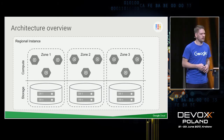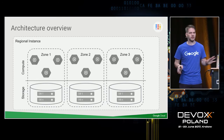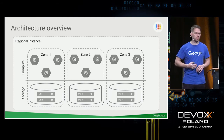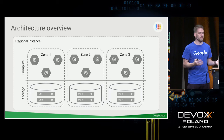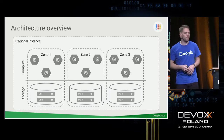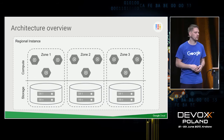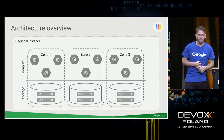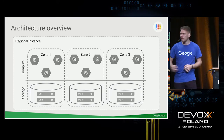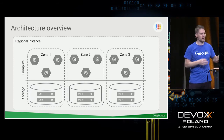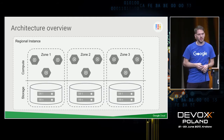In Spanner, compute and storage are separated — they are independent of each other. If you get a regional instance, you get an instance replicated across three zones. In this example, I have a regional instance with three nodes, and each node is replicated three times. So if you buy one node, you get one of those hexagons per zone. We also have dedicated storage in each region, with replicated data as well.